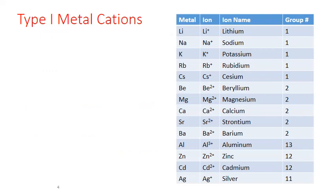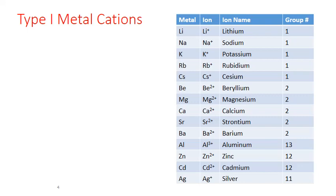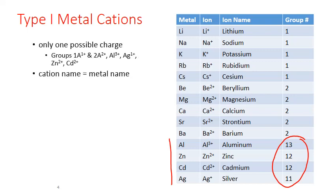The type 1 metal cations mostly come from the representative columns of the periodic table, particularly columns 1 and 2. There are also a few other metals from columns 11, 12, and 13. It's really important to know that not all metals in these columns have predictable ion charges, but you should know that aluminum, zinc, cadmium, and silver all form single charge ions. In terms of naming these ions, it's pretty simple — the cation name simply equals the metal name.